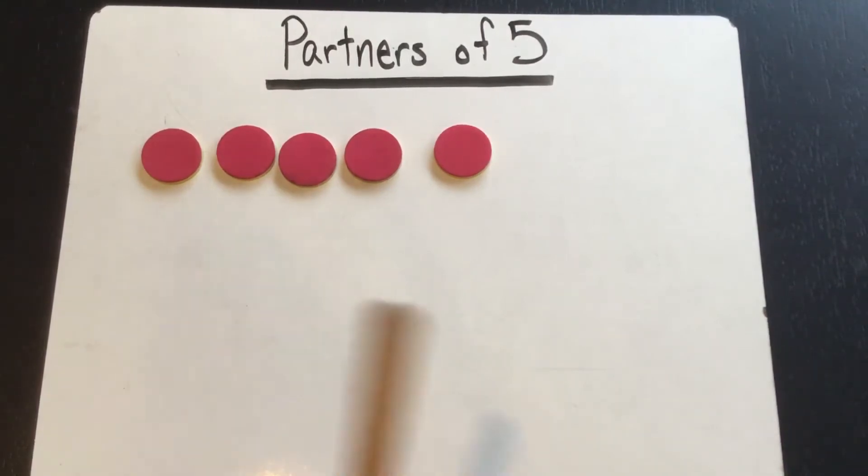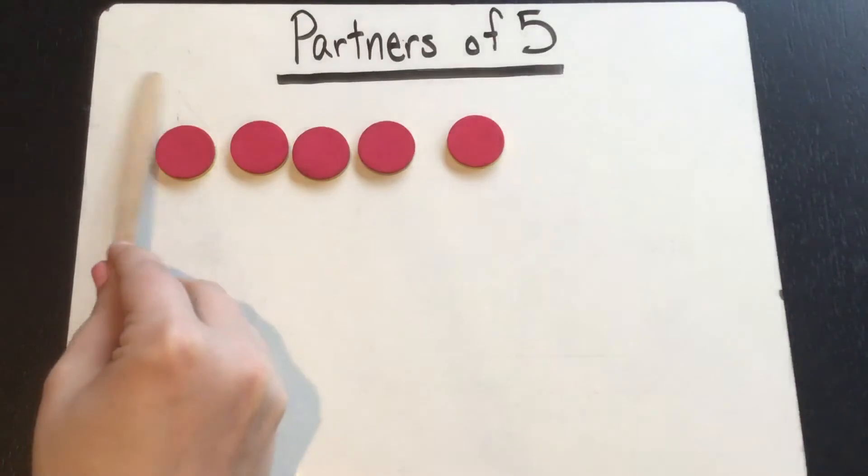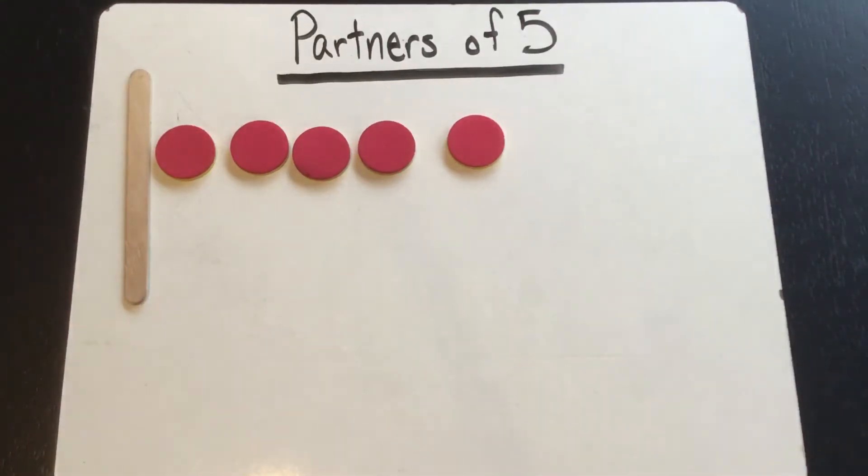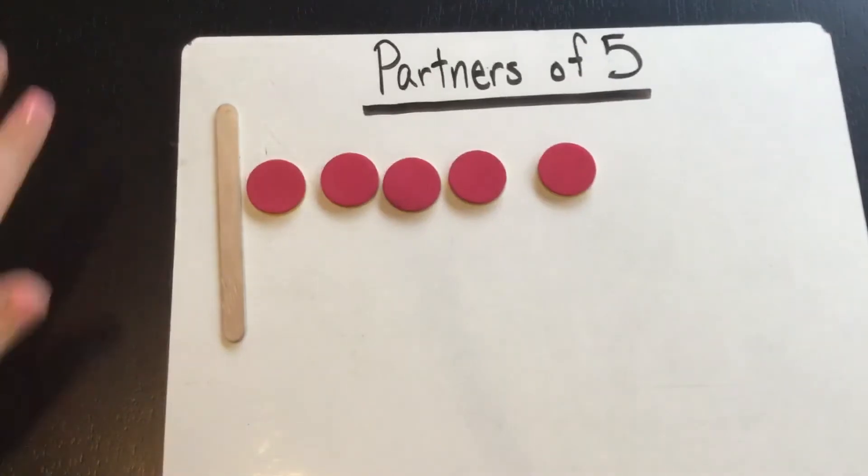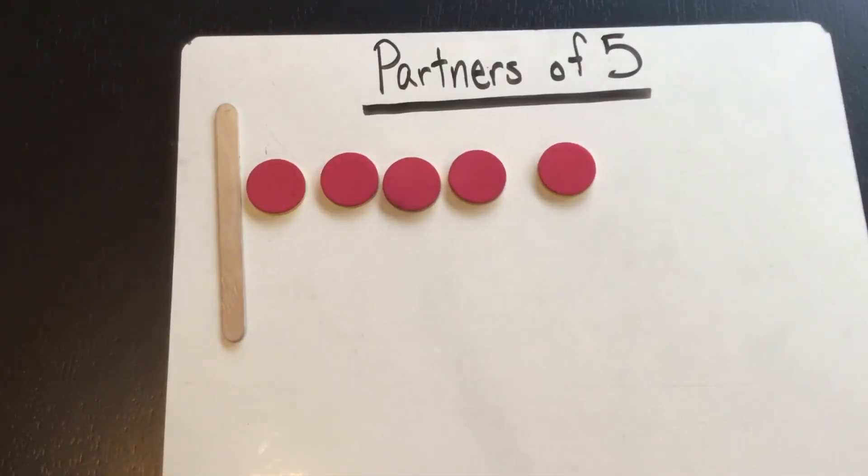We're also going to be using a break apart stick. For this you could use a pencil or a pen or a marker, anything. Just like we've done before in class, we're going to start by putting our break apart stick right at the very beginning and think about how many partners are on this side and how many partners are on this side. But all together there should be five.